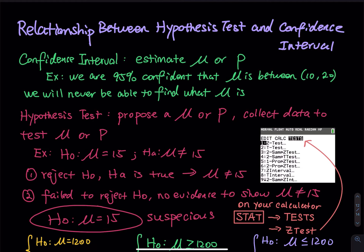We went through all these steps. Do you know that we do not need to do that many steps to determine reject and fail to reject? So let's say you have a problem, you have a H0 and HA — I can use a confidence interval to decide whether you should reject or fail to reject the null hypothesis.